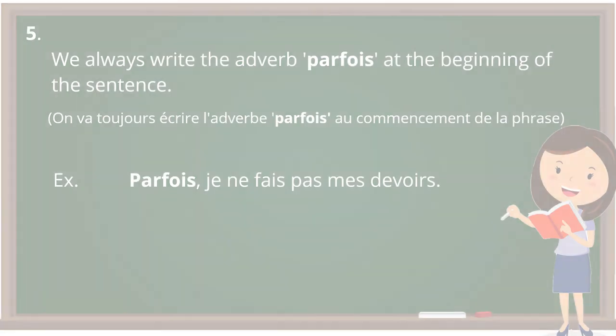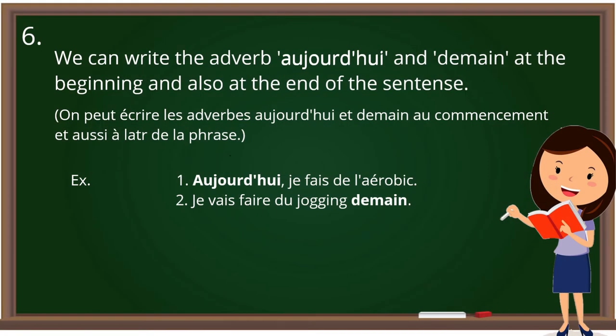Rule number six is also related to placement. We can write the adverbs 'aujourd'hui' and 'demain' either at the beginning or at the end of the sentence. For example: 'Aujourd'hui, je fais de l'aérobic.' And: 'Je vais faire du jogging demain,' which can also be said as 'Demain, je vais faire du jogging.' Similarly, 'aujourd'hui' can be placed at the end of the sentence.